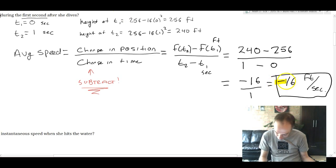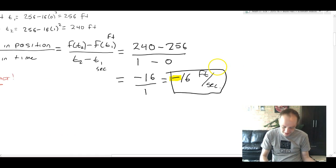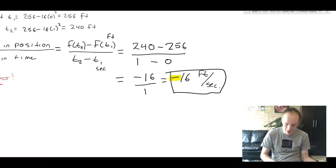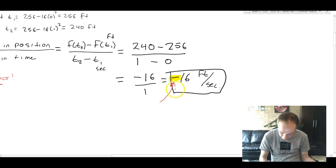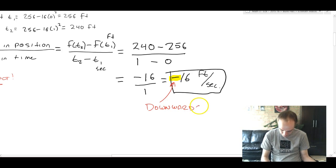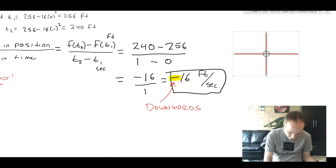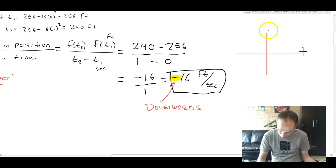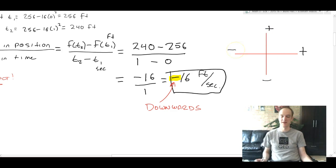The negative means that it's not that she's going negative speed, she's not going backwards. It means that her direction is downwards. In two-dimensional space, you have positive directions rightward and upwards and negative directions downwards and leftwards.